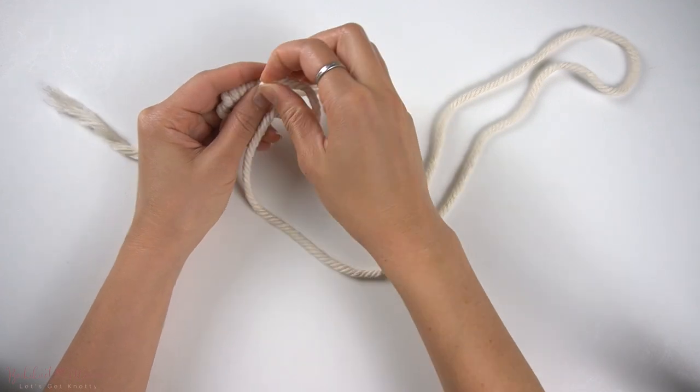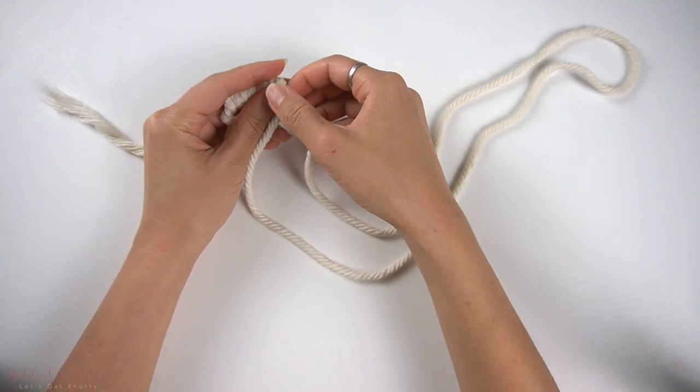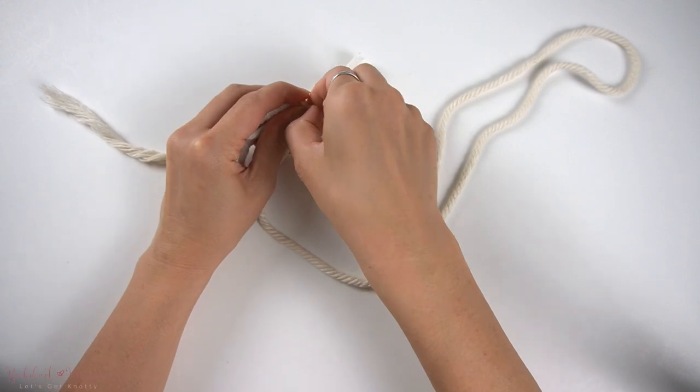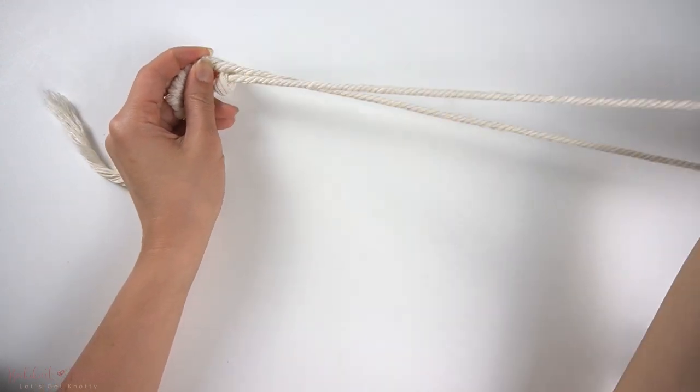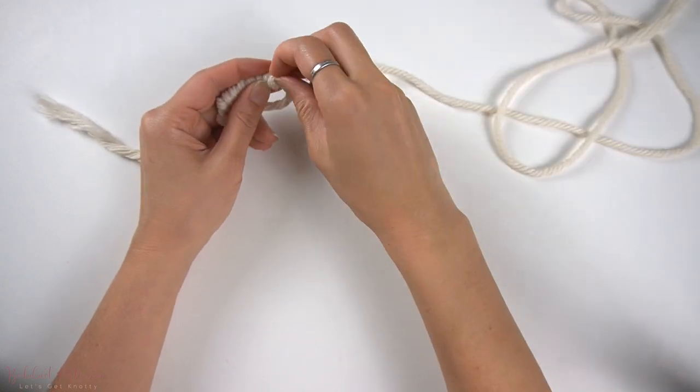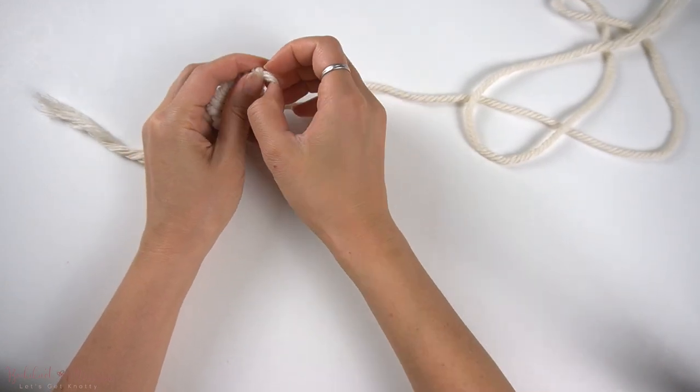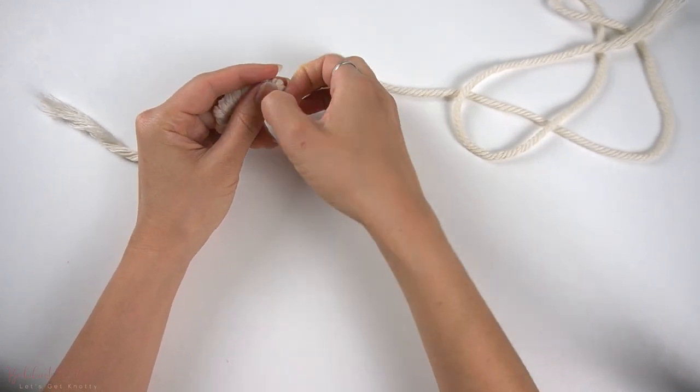This knot is great for starting a plant hanger without using an actual ring, like a wooden or metal one. There are multiple ways to make a ring using cord and this is just one of the many ways to do so.